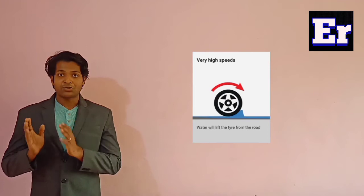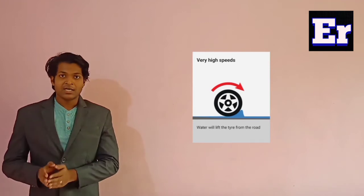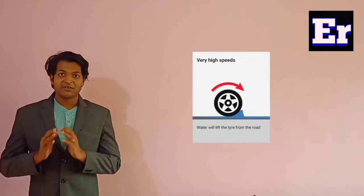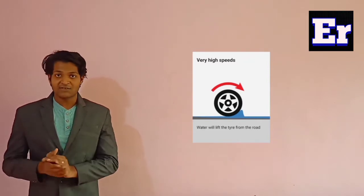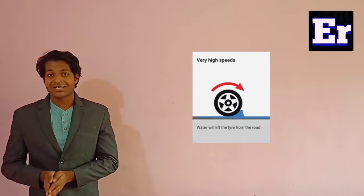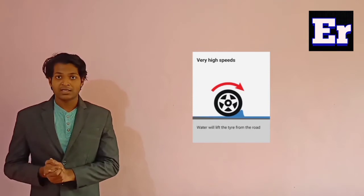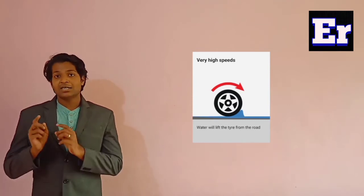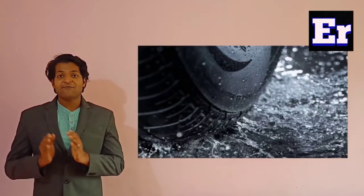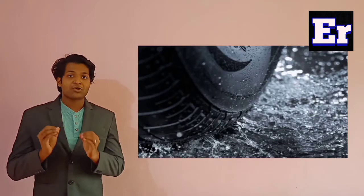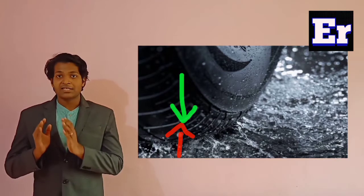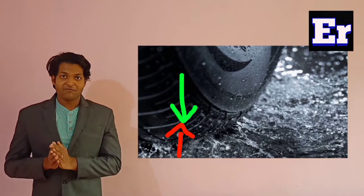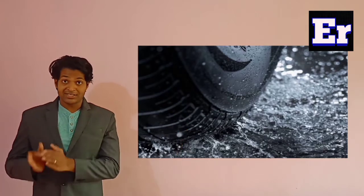So at a particular speed, the grip of the tire will tend to float over the water-film level on the road surface. This effect is known as hydroplaning. What causes the hydroplaning effect? This is because the lift force created in the hydrodynamic pressure region gets equalized with respect to the normal reaction, or the weight of the vehicle that is acting through the tire.